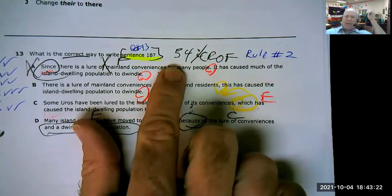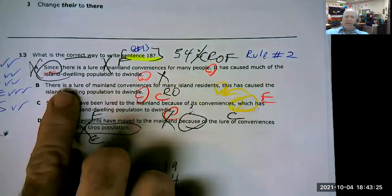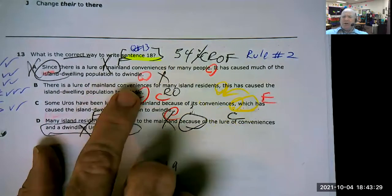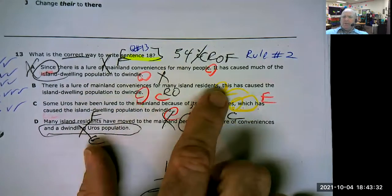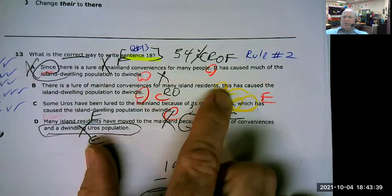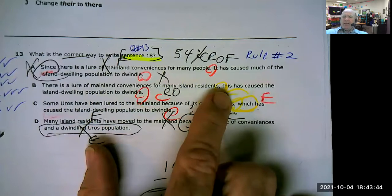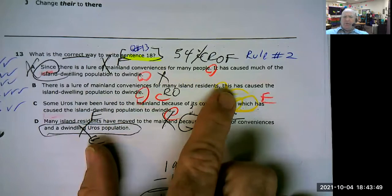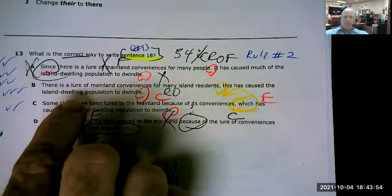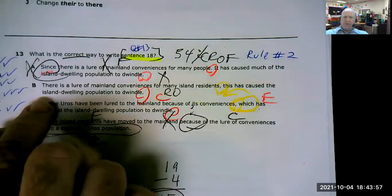And the dependent clause is dependent on me putting a comma and a lowercase it. So I can't choose this one because of letter A being turned into a fragment the way it's written. Letter B. Capital. There is a lure of mainland conveniences for many island residents comma this. Because you only slowed the sentence down and you should have stopped it.